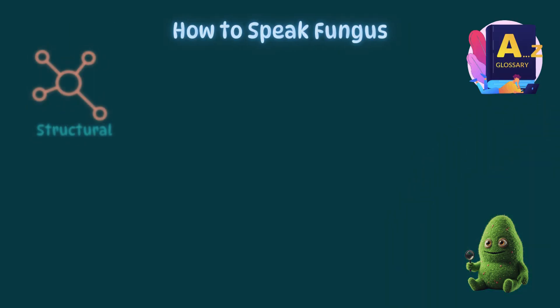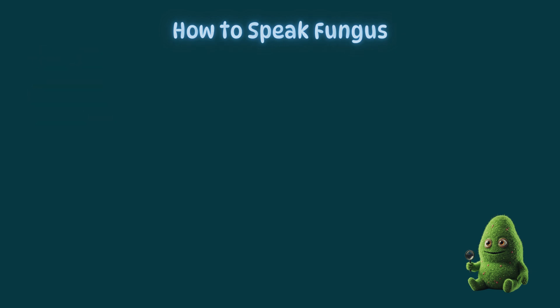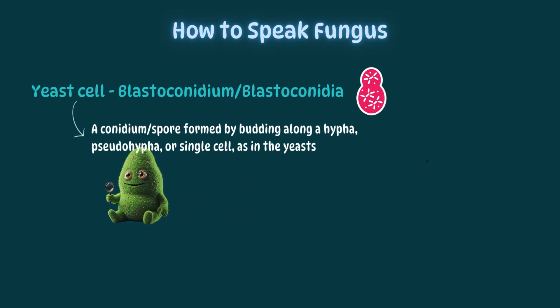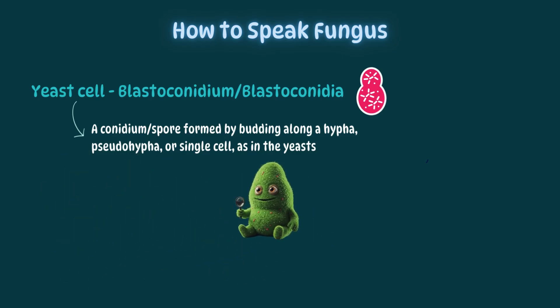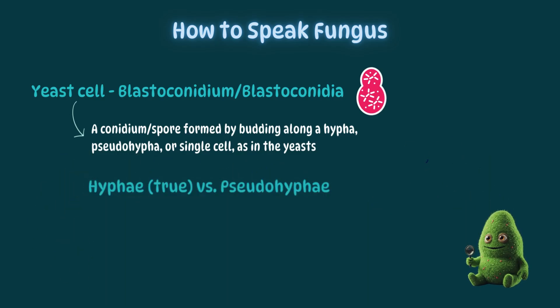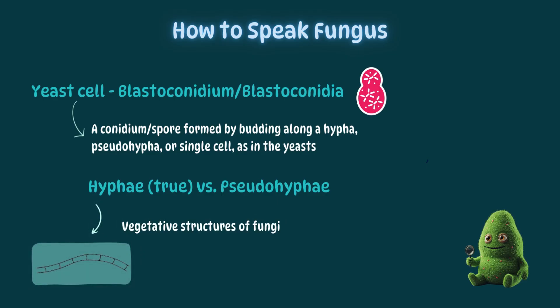So, how do you speak fungus? These organisms have evolved such unique shapes and features that they've also evolved their own structural language. Buddy is excited to see us start with yeast. Although he's not a complicated guy, Buddy is actually the best a yeast could hope to become. Blastoconidium, or blastoconidia for the plural, is a fancy term for a yeast cell. Technically, it's a spore or conidium formed by budding along a hypha, pseudohypha, or single cell. This brings us into the hyphae.